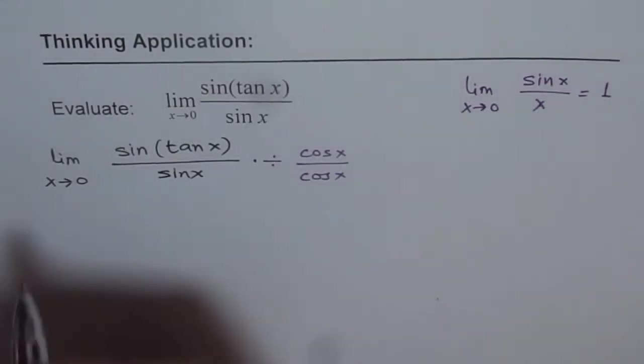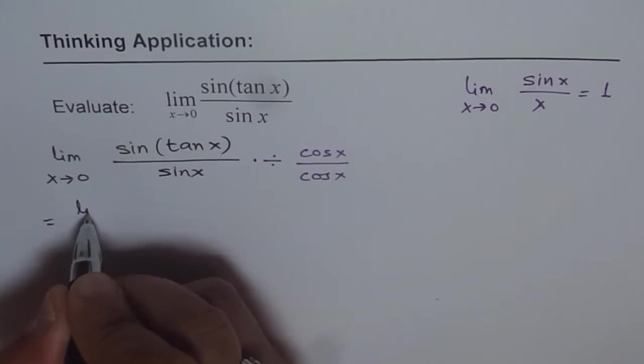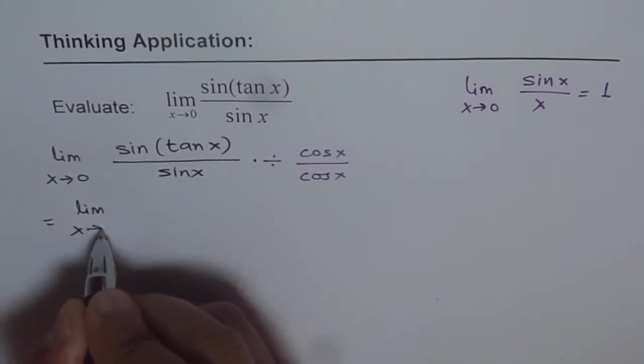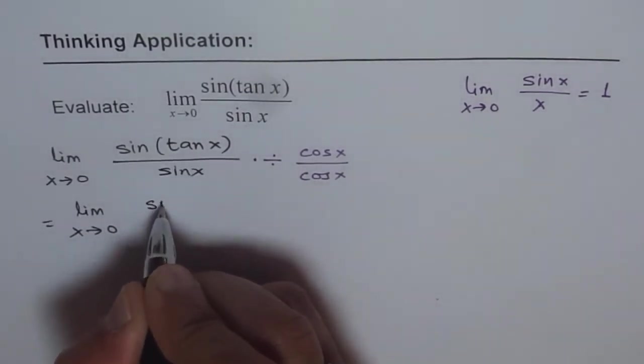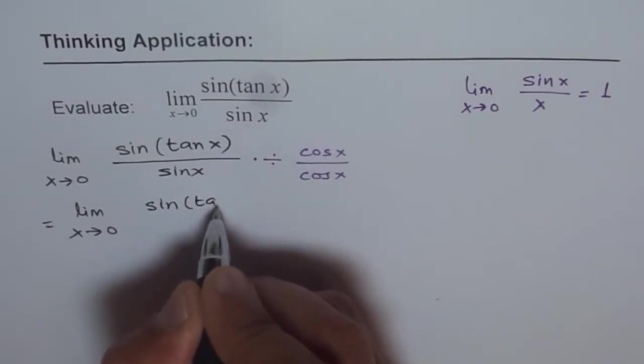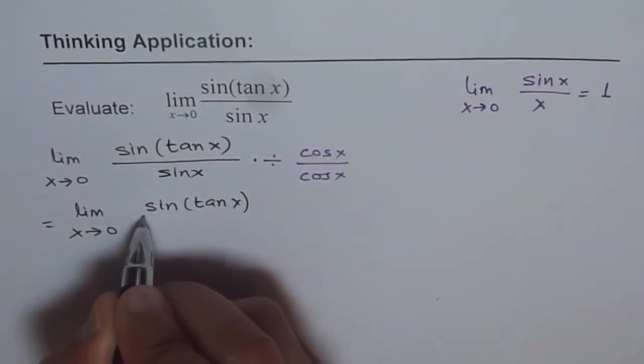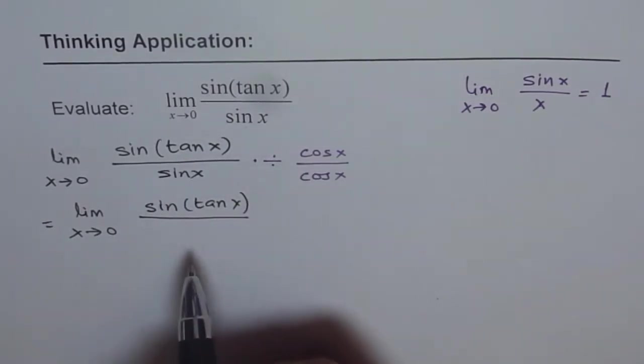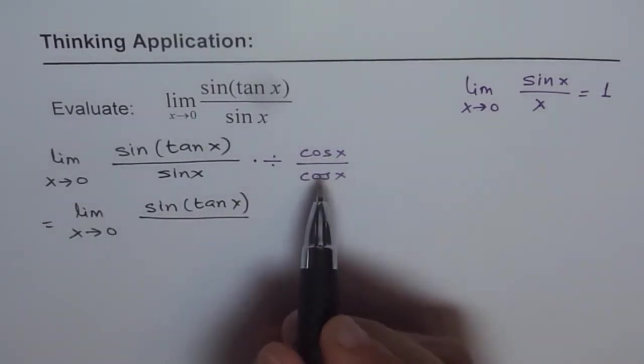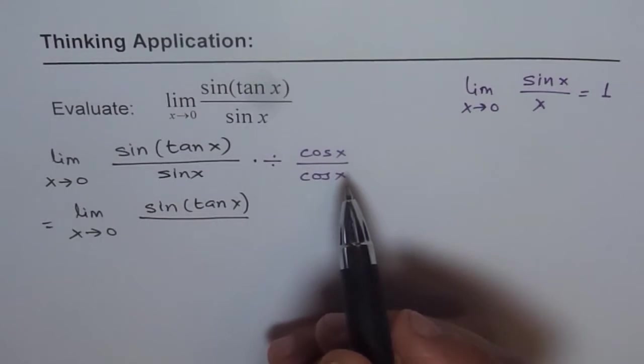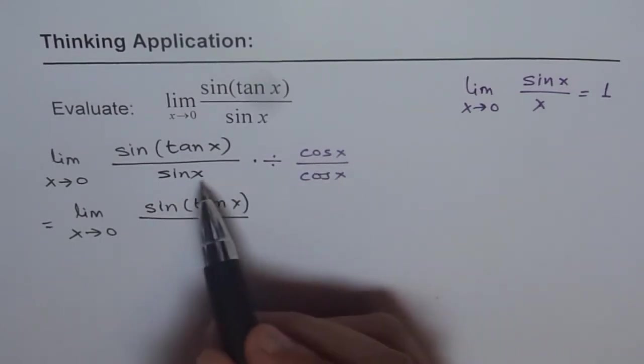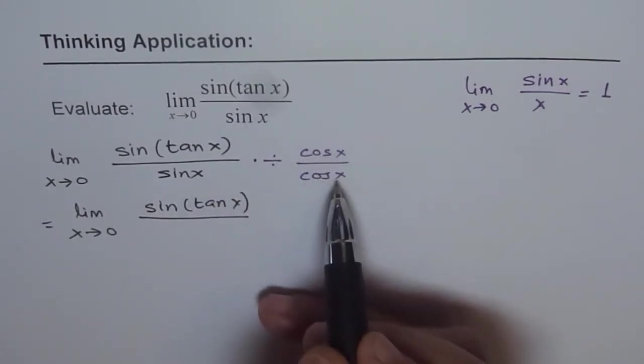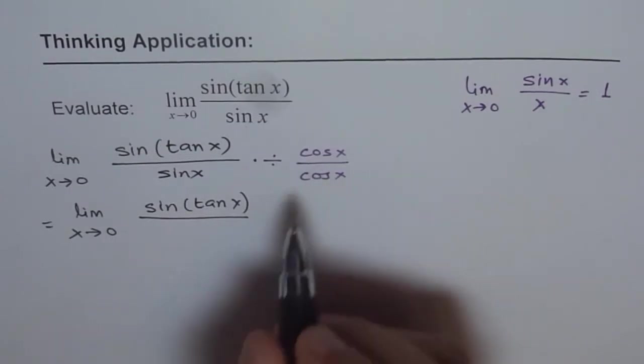So that is the strategy. We can write this as limit as x approaches 0 of sin(tan x) over sin x over cos x. So dividing by cos x is the same as multiplying by cos x, correct? So you divide by this and you get 1 over cos x here. Let me rewrite this.